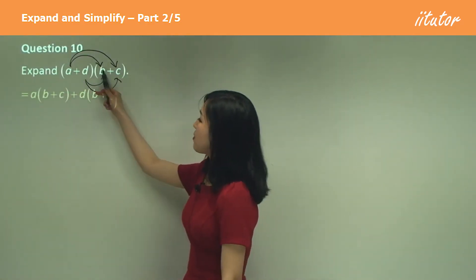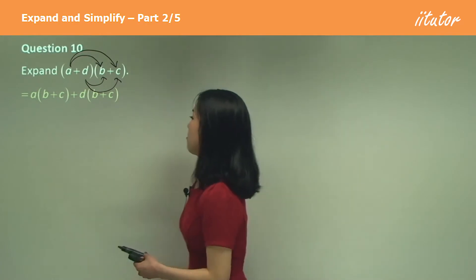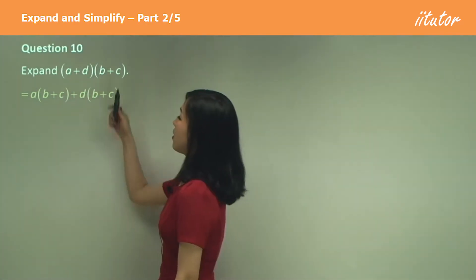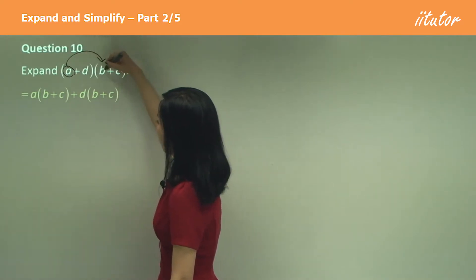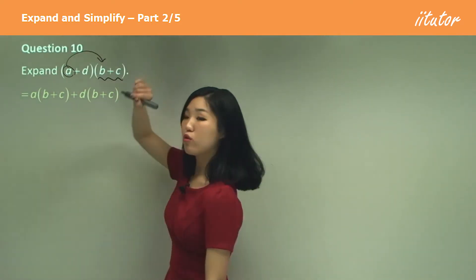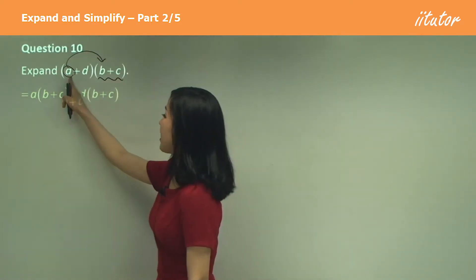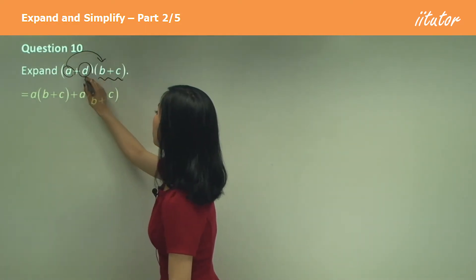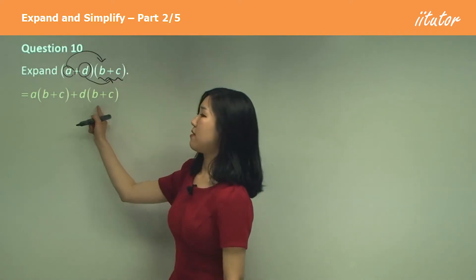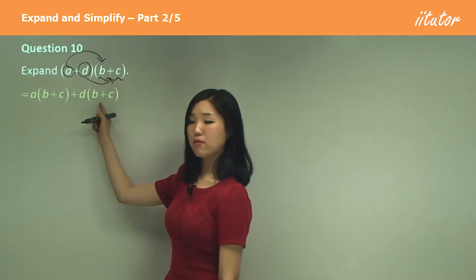So we do A times B. I'll wrap the whole bracket. So I did A times B plus C. And then you do D times B plus C. So see how I did D times B plus C?